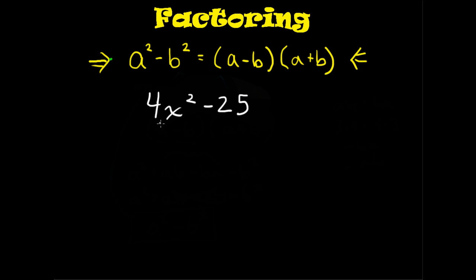Notice the 4 and the 25 are perfect squares, meaning 2 times 2 is 4, and 5 times 5 is 25. We can rewrite it in this format here. What this looks like is 2x squared minus 5 squared. Notice, if I square each of these quantities, 2x squared is actually 4x squared, and 5 squared with the negative in front is still negative 25. We just rewrote it so that it looks like this.